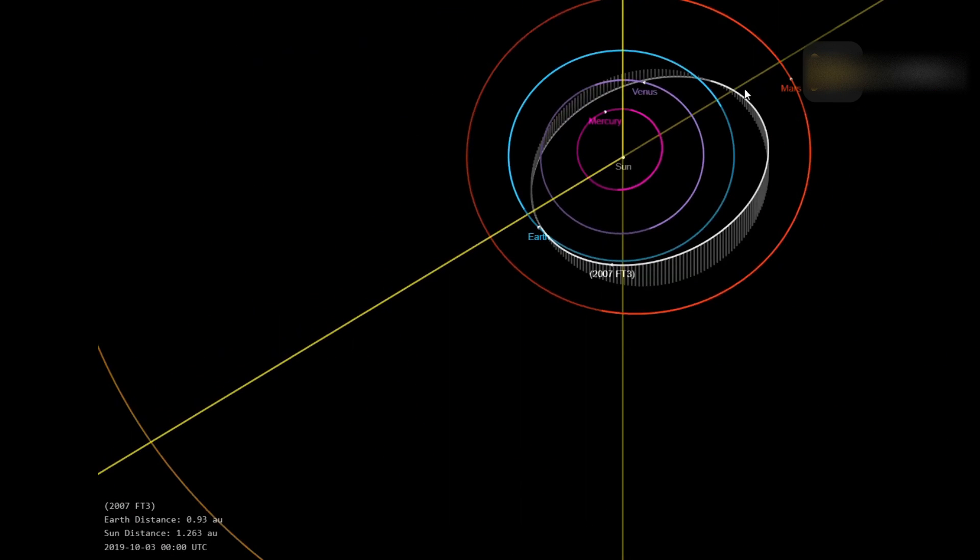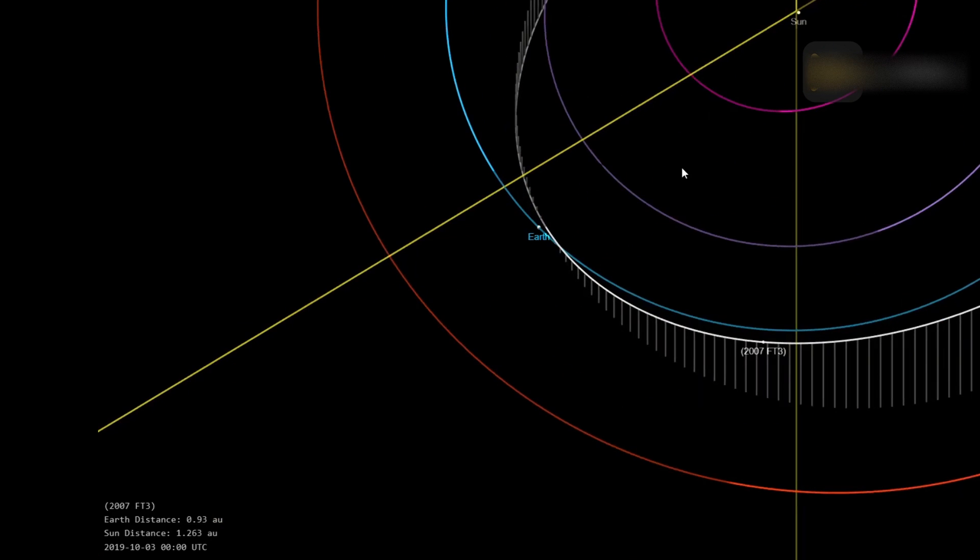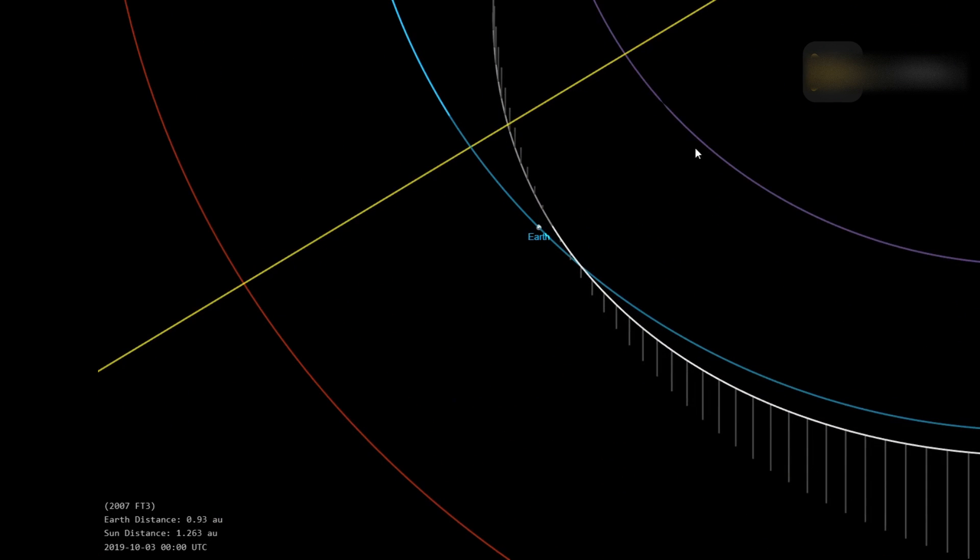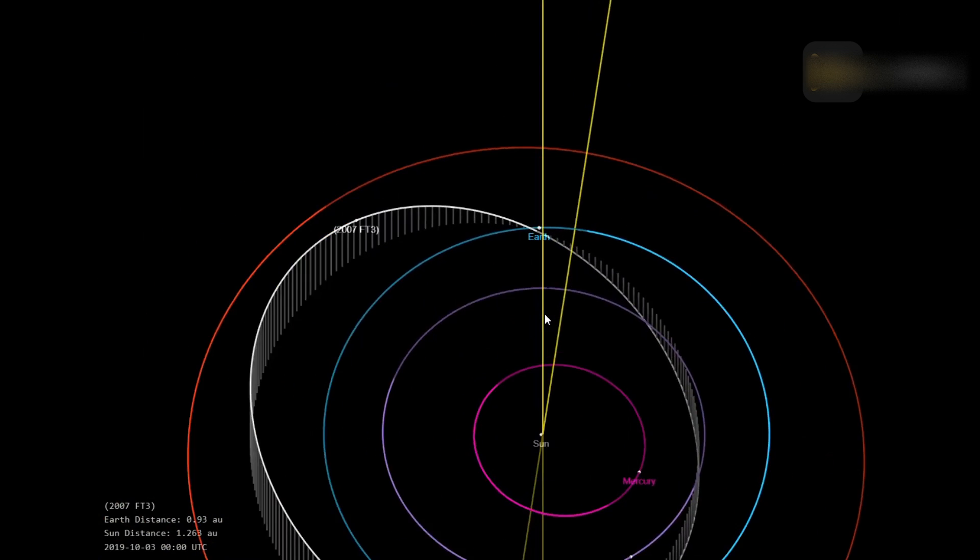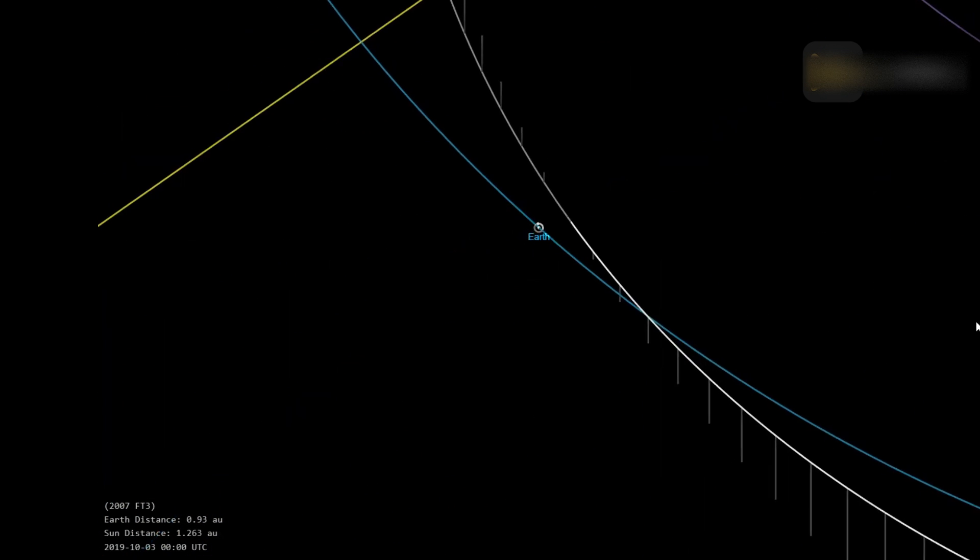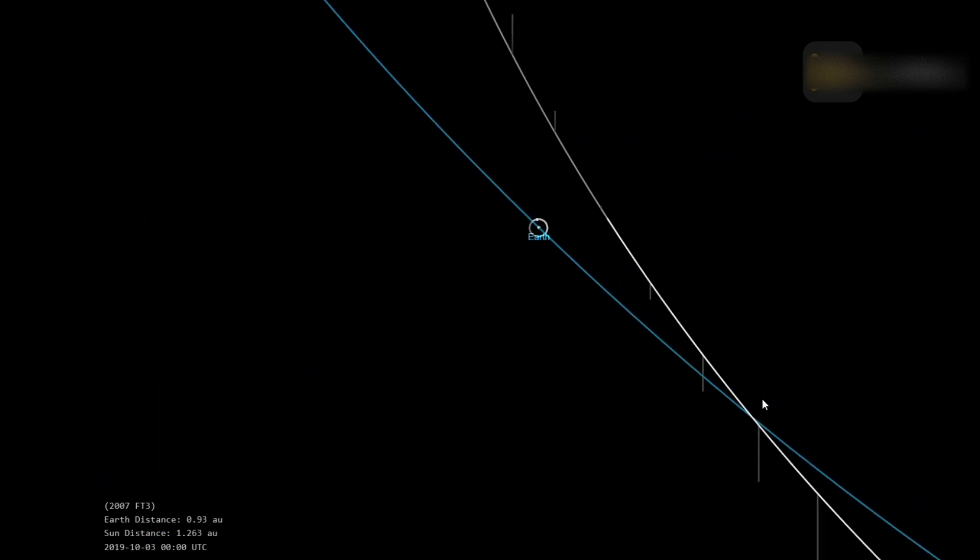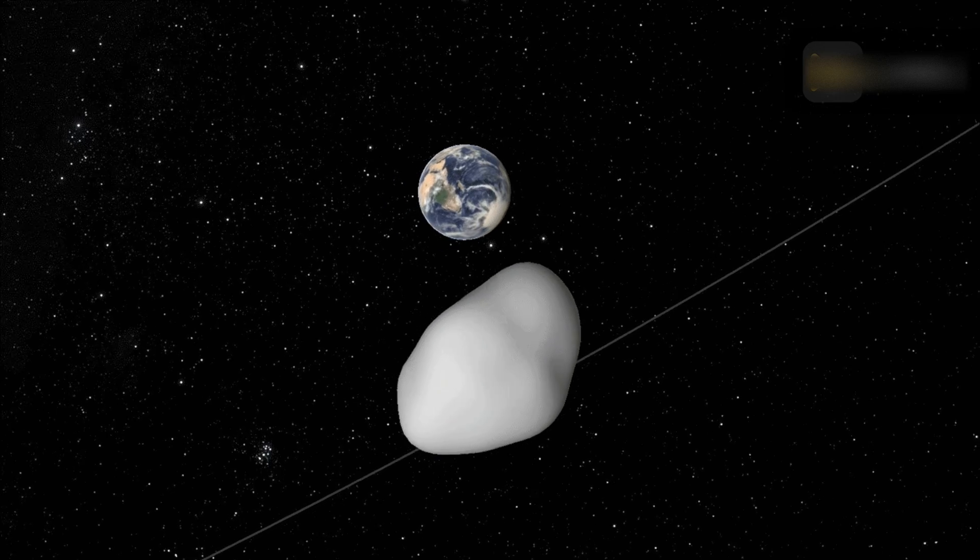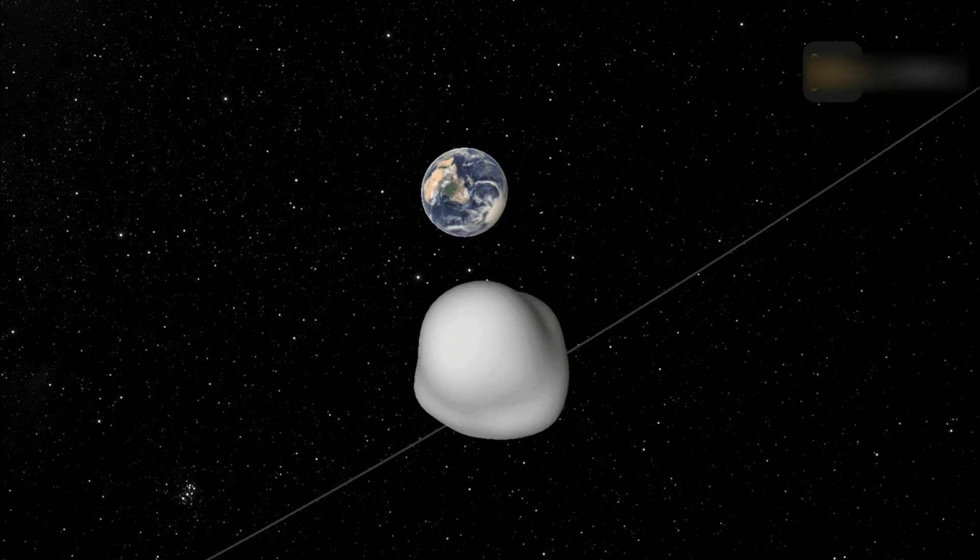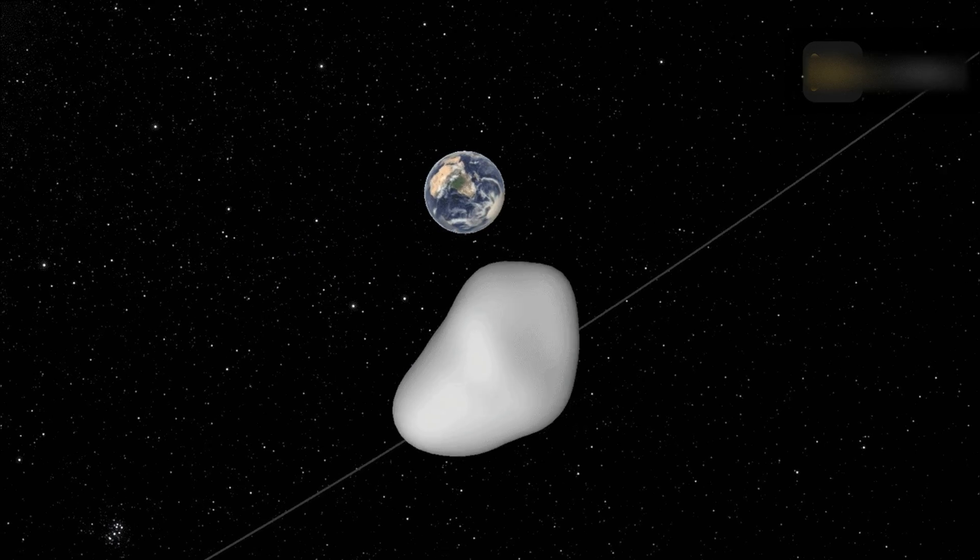2007 FT3 orbits the Sun every 439 days, 1.20 years, coming as close as 0.78 astronomical units and reaching as far as 1.48 astronomical units from the Sun. Based on its brightness and the way it reflects light, 2007 FT3 is probably between 0.266 to 0.594 kilometers in diameter, making it larger than 90% of asteroids but tiny compared to large asteroids, very roughly comparable in size to the US Capitol building.